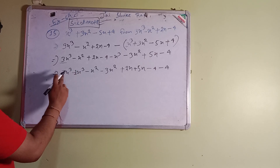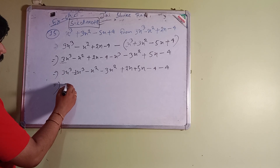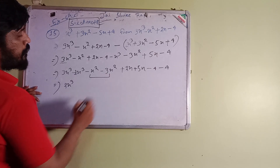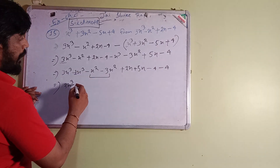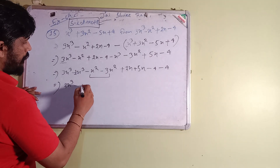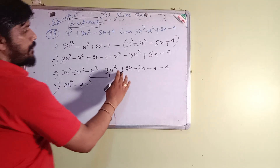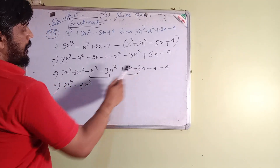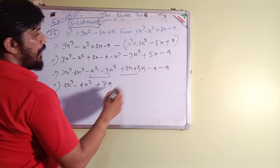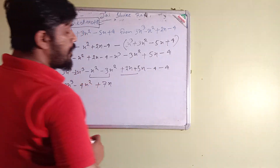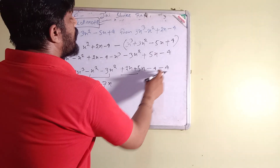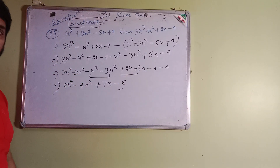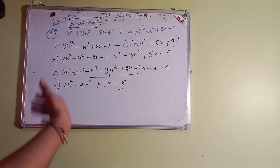3 minus 1 gives 2x³. For minus x² and minus 3x², same sign so we add: that gives minus 4x². For plus 2x and plus 5x, same sign addition gives plus 7x. For minus 4 and minus 4, same sign addition gives minus 8. So the answer to number 15 is 2x³ minus 4x² plus 7x minus 8.